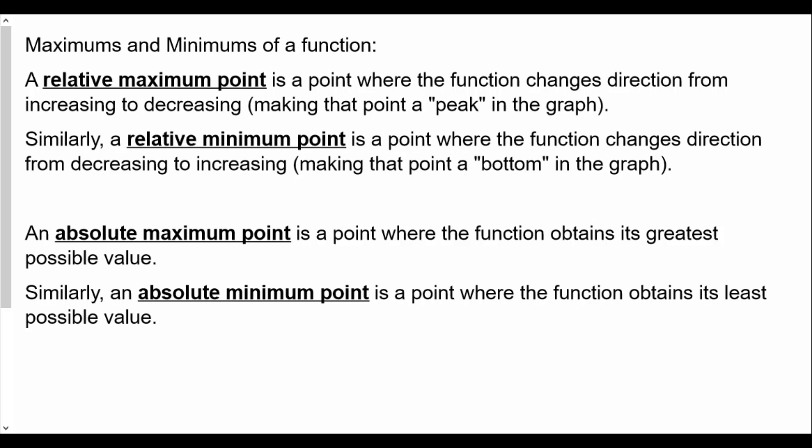An absolute maximum is where the function obtains its greatest possible value overall. Similarly, an absolute minimum is the lowest point of the entire function. Some functions don't have an absolute maximum because infinity is not a number. You can have multiple relative maxima and minima in an interval — each one just needs to be the highest or lowest point in its local area.